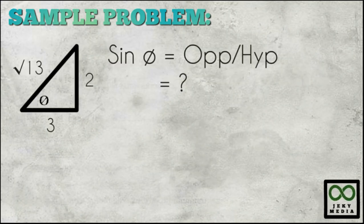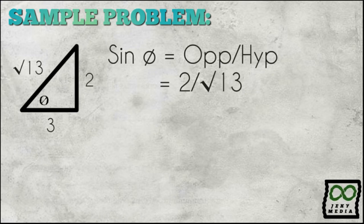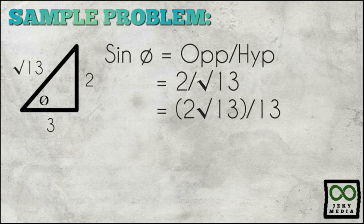First, we'll identify the value of sine theta — opposite over hypotenuse — which gives us 2 over the square root of 13. To rationalize the denominator, multiply the square root of 13 to both the numerator and denominator. The result will be 2 square root of 13 over 13.